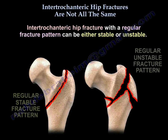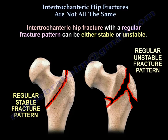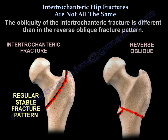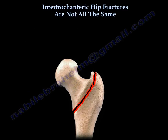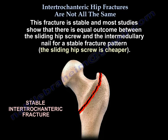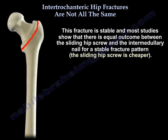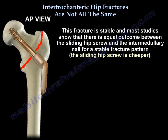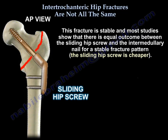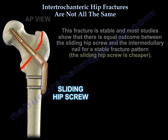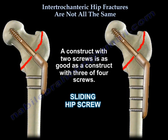An intertrochanteric fracture with a regular fracture pattern can be either stable or unstable, and the obliquity of the fracture is different than in the reverse oblique fracture pattern, as you can see here. This fracture here is stable, and most studies show equal outcome between a sliding hip screw and an intramedullary nail for a stable fracture pattern. The sliding hip screw is cheaper, and a construct with two screws is as good as one with three or four screws.